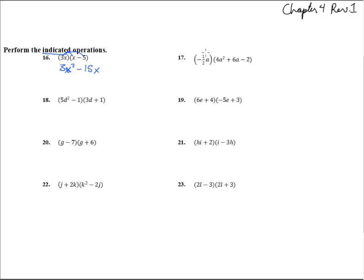Number 17, jump this guy in here and we get negative 1 half times 4, that's a negative 2, and then the a's, there's 1, 2, 3 more, so a cubed there. Negative 1 half times 6 is negative 3, a times a is a squared. And then the last one, negative 1 half times a negative 2 is a plus 1a. There we go.